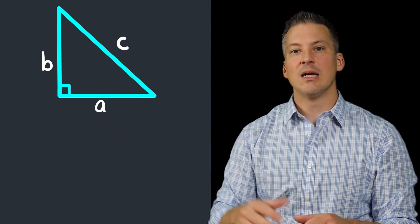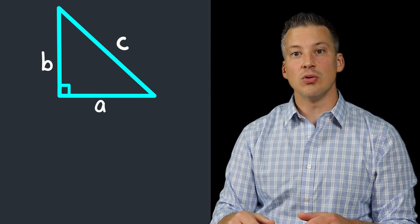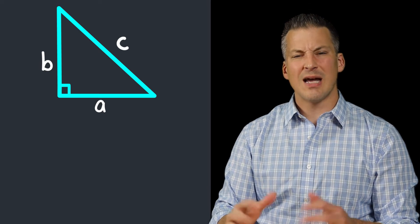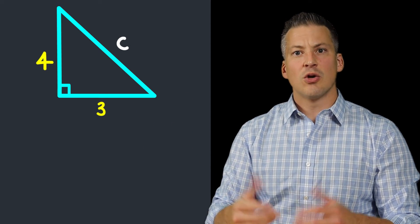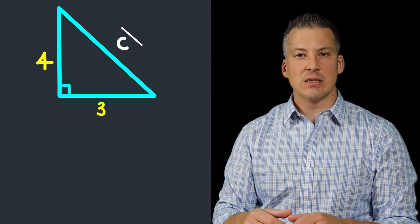So let's say we have a triangle, and let's say we know the length of two of those sides, not the hypotenuse. So let's say one of them is 3, the other one's 4. The question is, then, how do we figure out that missing side?